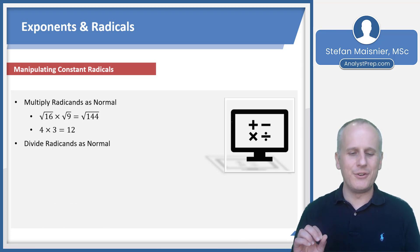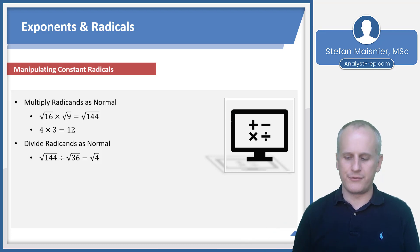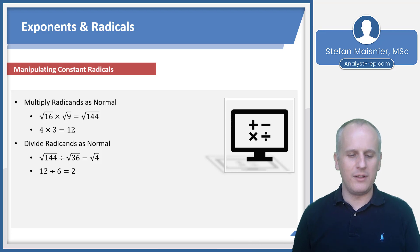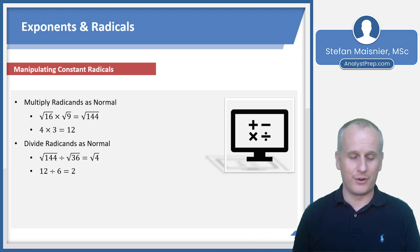You can also divide radicands as normal. The square root of 144 divided by the square root of 36 is just the square root of 4. Taking the square roots individually: the square root of 144 is 12, the square root of 36 is 6, and the square root of 4 is 2. Indeed, 12 divided by 6 equals 2, confirming the result.